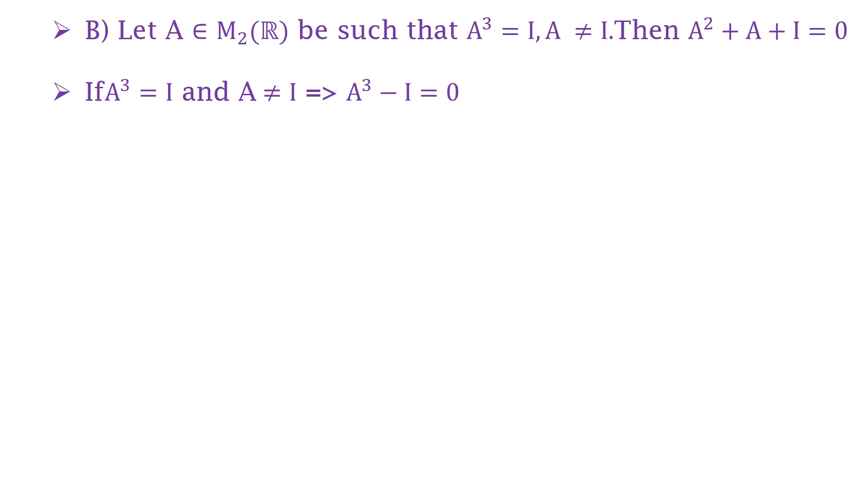then A³ = I which implies that A³ - I = 0, which gives us (A - I)(A² + A + I) = 0, which implies A² + A + I = 0. Therefore option B is correct.